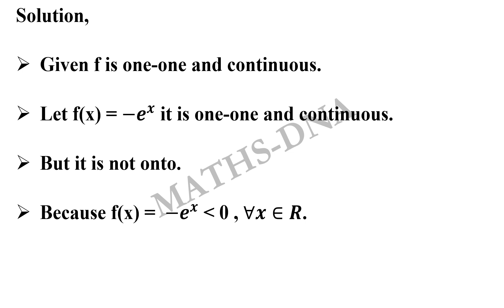Because f(x) will be nothing but -e^x which will be less than 0 for all x belongs to R. So definitely it will not be onto, and so option A which says that f is onto is incorrect.